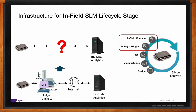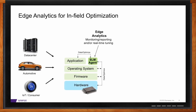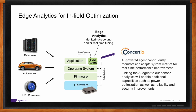To access the silicon hardware of a system in the field, the only way is to have software embedded in the system itself. We've developed the concept of an SLM agent that resides in the target system — at the application layer or potentially the firmware layer. It performs edge analytics locally, monitoring the full hardware-software stack, including the software, OS, and hardware. Based on the monitored data, it can do localized analytics and, depending on the situation, perform real-time tuning or optimization of the system.